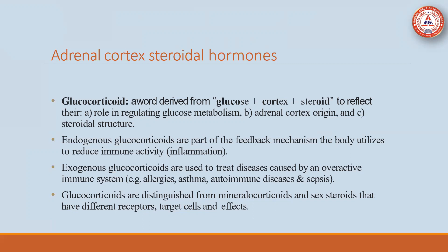Glucocorticoid involves glucose metabolism, is released from the cortex area, and contains a steroidal moiety. Endogenous glucocorticoids are part of the feedback mechanism the body utilizes to reduce immune activity. Exogenous glucocorticoids are used to treat diseases caused by an overactive immune system, for example, allergies, asthma, autoimmune disease, and sepsis. Exogenous glucocorticoids are distinguished from mineralocorticoids — they have different receptors, different target cells, and different effects.